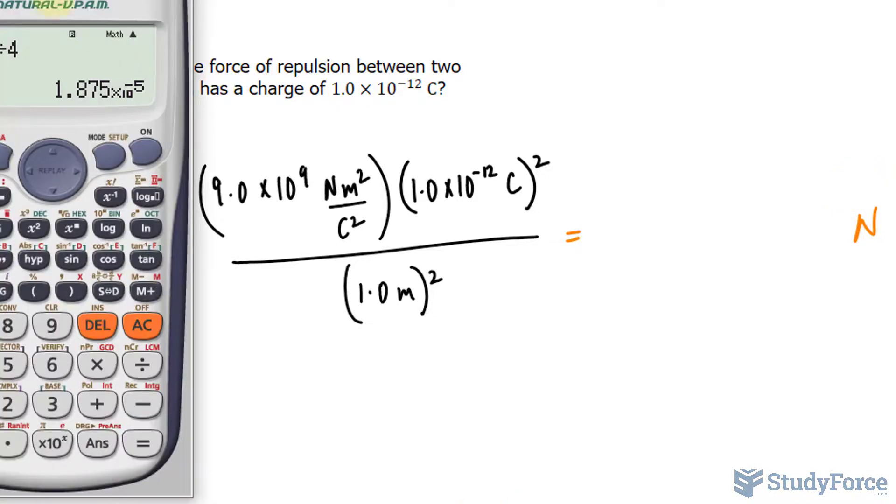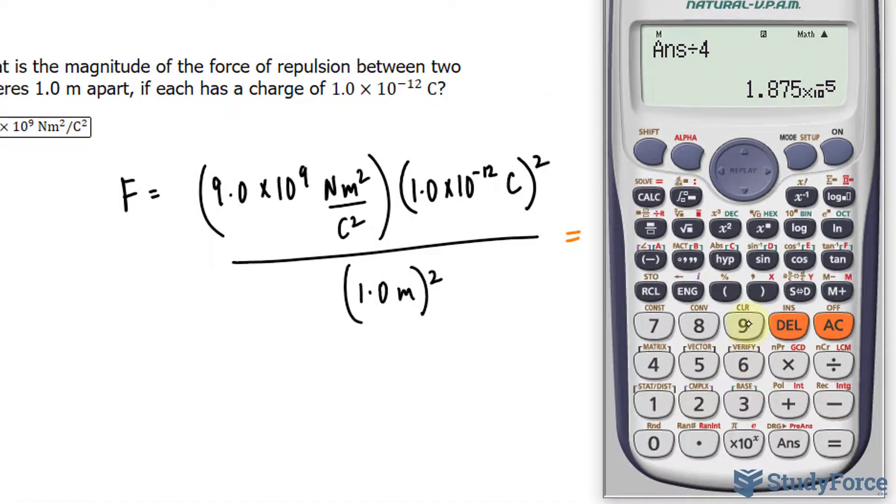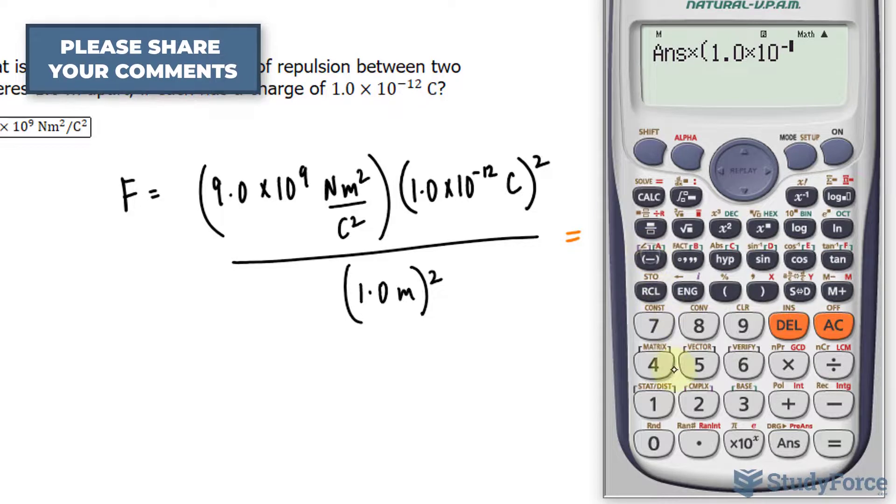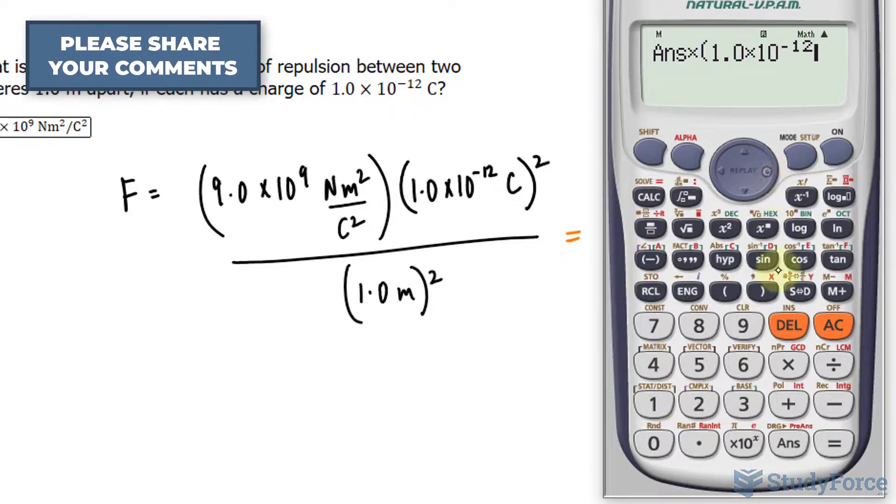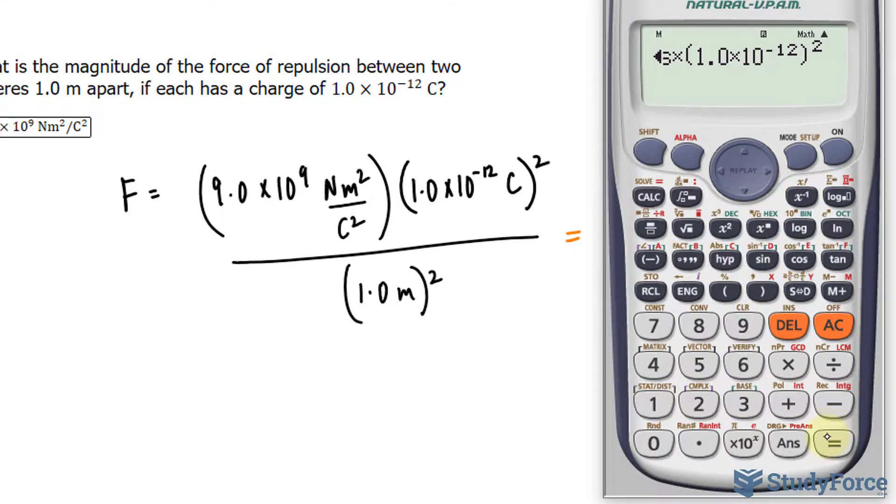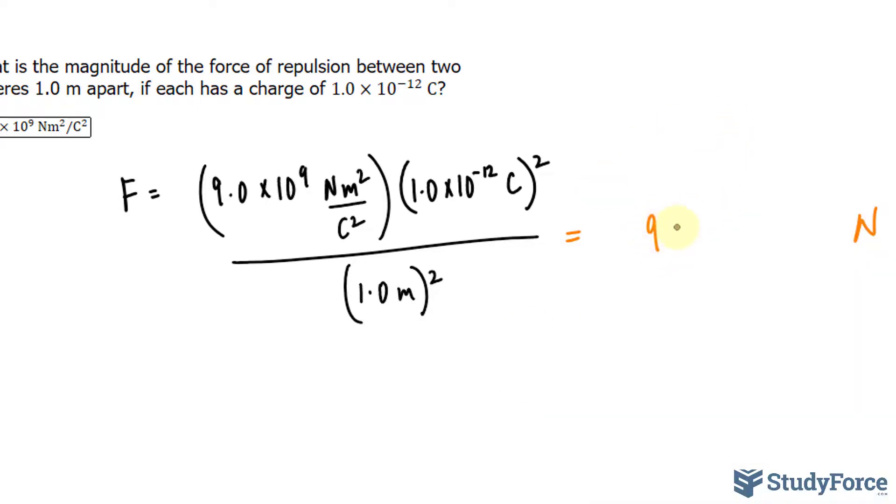And the final units should be in Newtons. So let's go ahead and use our calculator really quickly. We have 9.0 times 10 to the power of 9, that's the constant, times 1.0, and notice that I'm putting it in parentheses, raised to the power of negative 12, and that's all being squared, and then we'll divide that by 1.0 to the power of 2, and we end up getting 9 times 10 to the power of negative 15 Newtons.